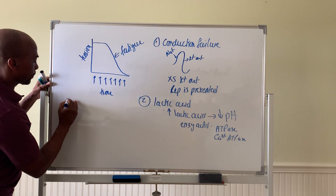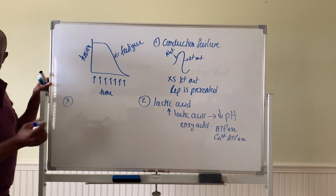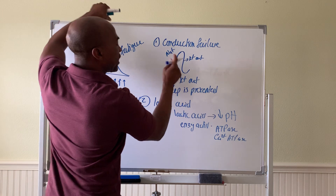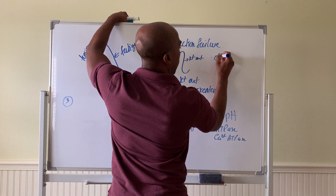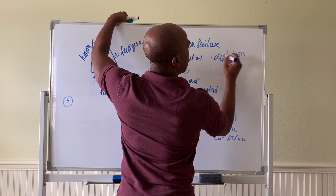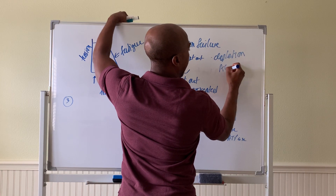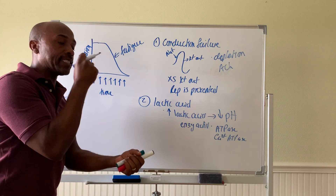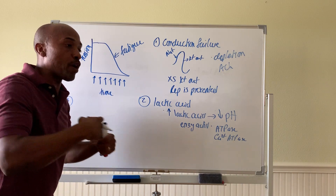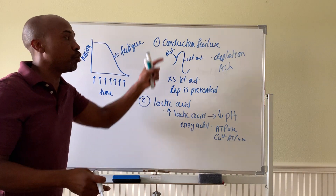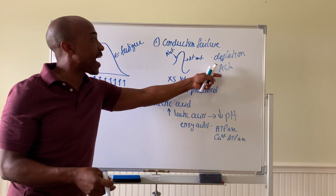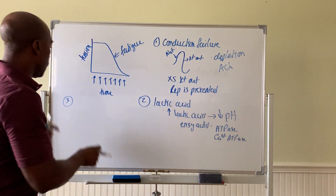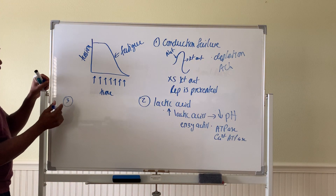Another factor is depletion of ACh. Remember the ACh is released in the NMJ. If you are always activating that NMJ you may run out of ACh — you need time to replenish it. So ACh depletion is also a factor that can prevent the muscle from working properly.